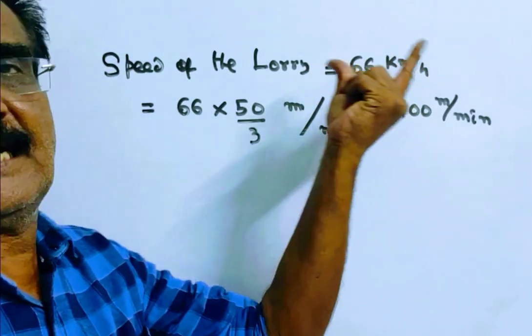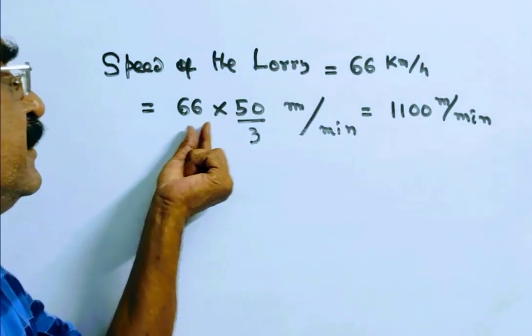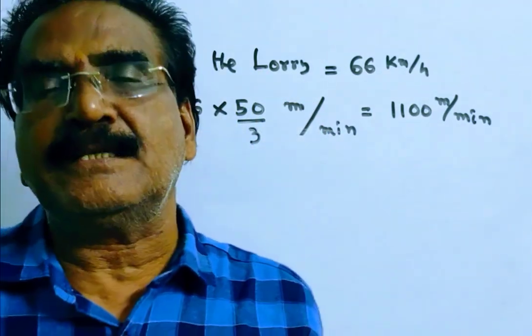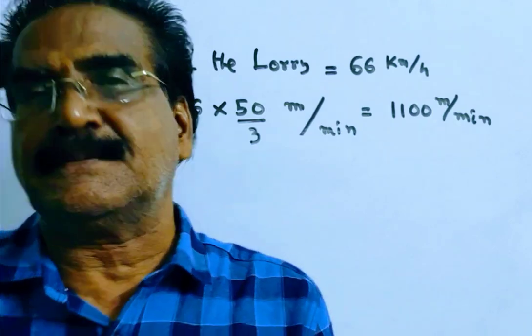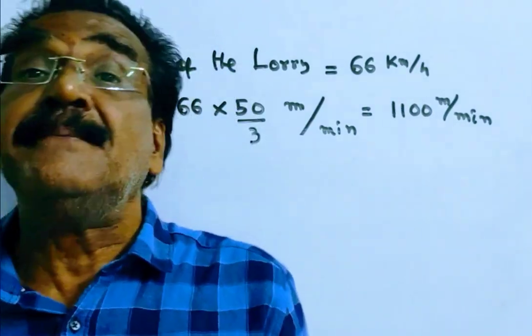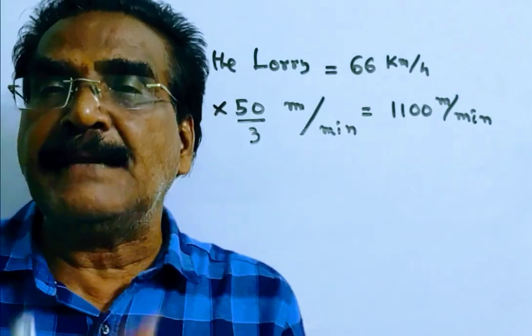66 kmph means 66 into 50 by 3 meters per minute. 1 kmph is equal to 50 by 3 meters per minute. Like 1 kmph is equal to 5 by 18 meters per second, 1 kmph is equal to 50 by 3 meters per minute.